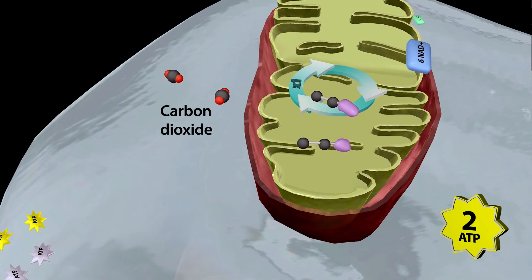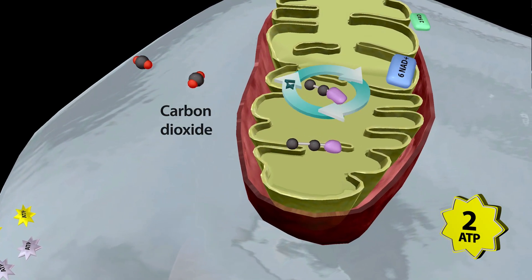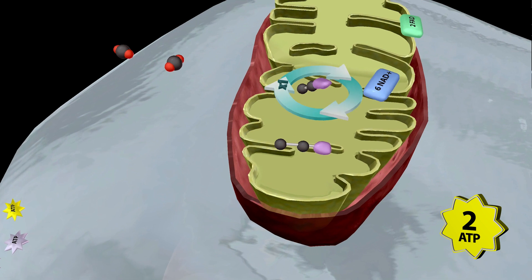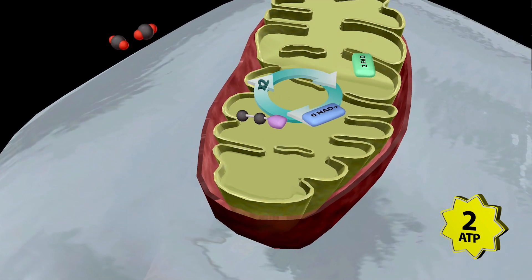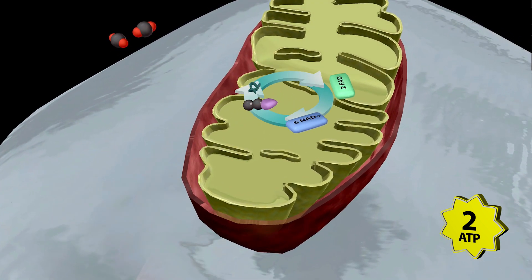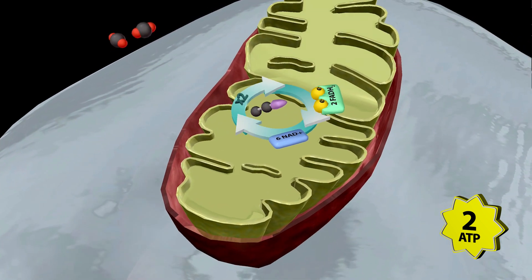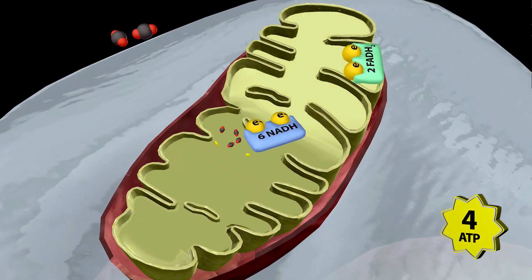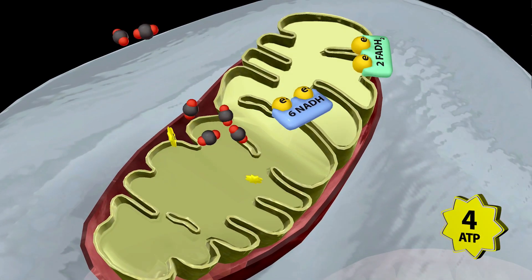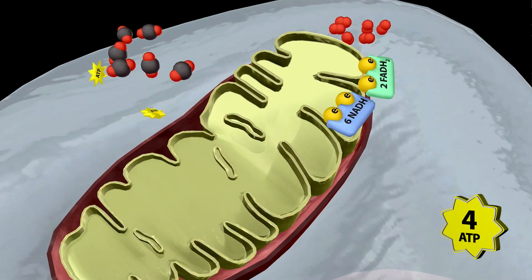Two rounds of the citric acid cycle, one for each acetyl-CoA molecule, produce four carbon dioxide molecules, two ATP, and the electron carrier molecules NADH and FADH2.